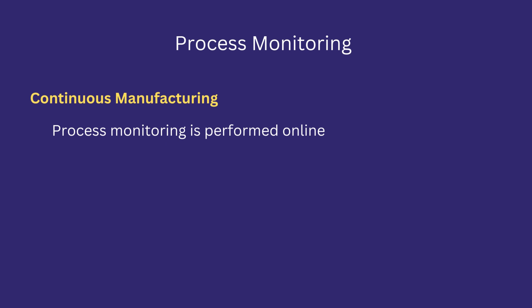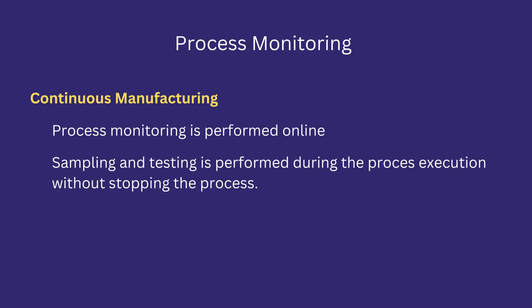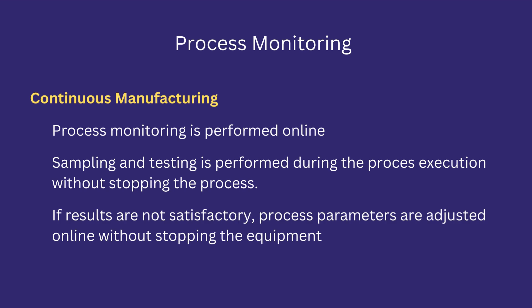In continuous manufacturing, process monitoring is performed online. Sampling and testing is performed during process execution without stopping the process. If results are not satisfactory, process parameters are adjusted online without stopping the production process.